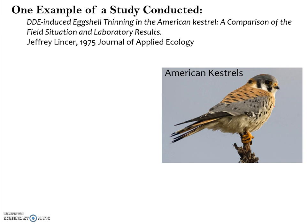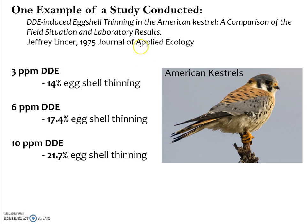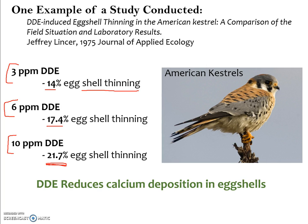In a study using American kestrels — another raptor — female birds were fed mice laced with different amounts of DDE, and researchers measured eggshell thinning relative to mothers that received no DDE. As DDE exposure increases, eggshell thinning increases. Further study shows that DDE inhibits calcium deposition in eggshells, making shells thinner, and individuals are less likely to survive to hatch.